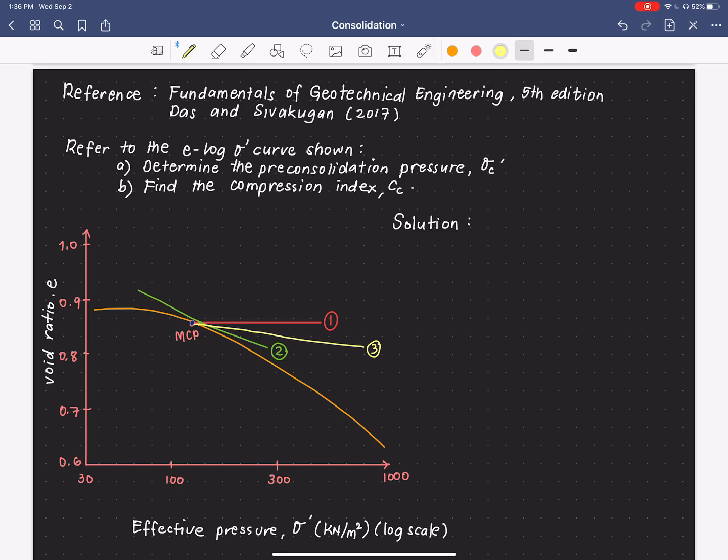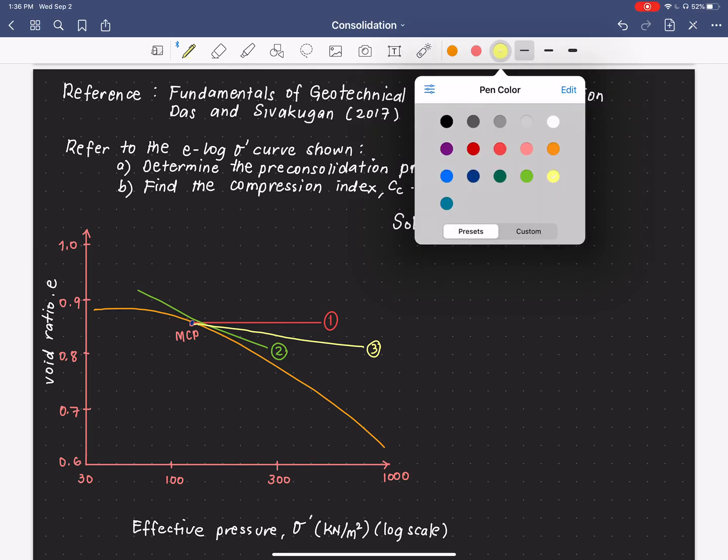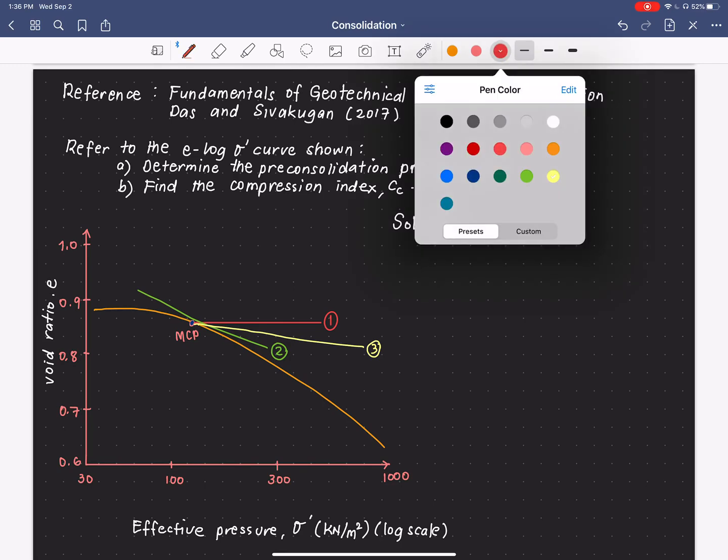Then, the fourth step is draw a line from the virgin curve going up intersecting our bisector line. So, from here, draw a line intersecting our bisector, which is this point.